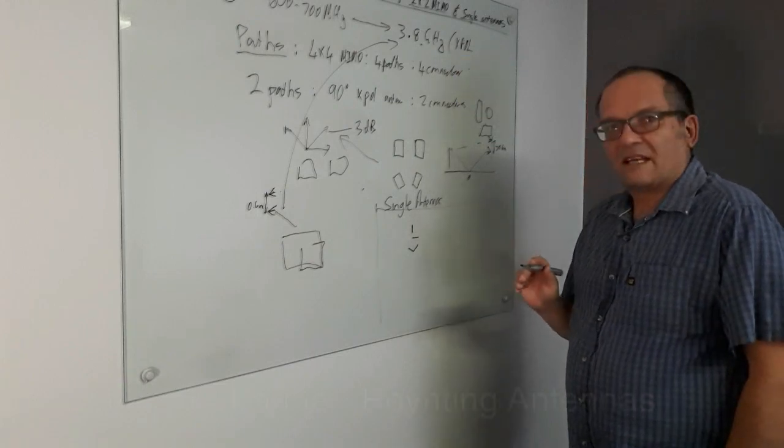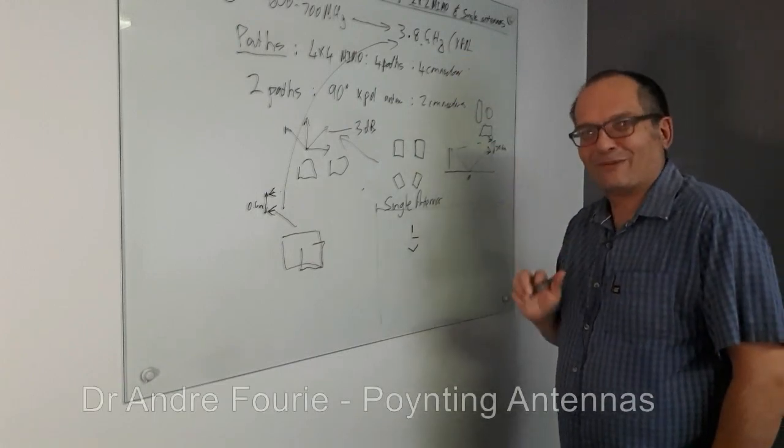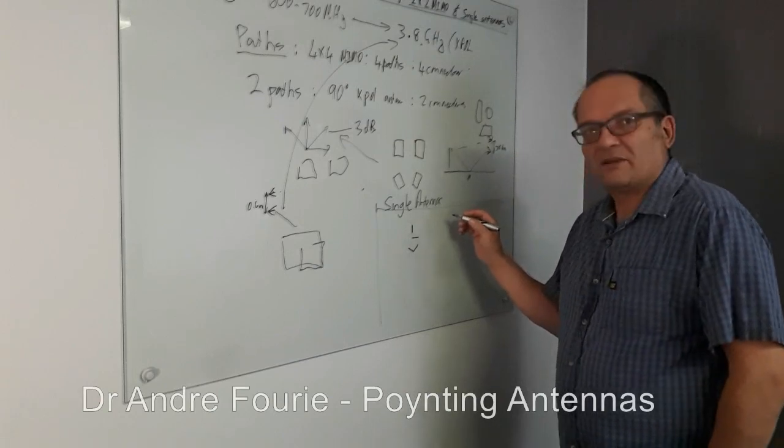Alternatively, you can use, say for example, X-Pulse. Sorry, X-Pulse is out. We've already done X-Pulse. You can also use Omnis. Omnis is perhaps the most difficult ones to use.